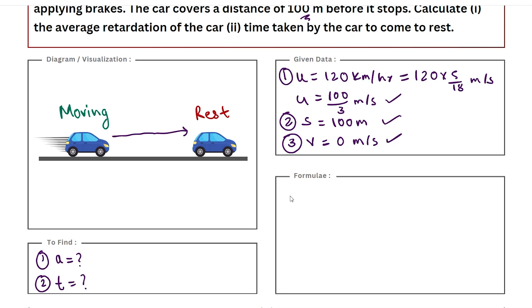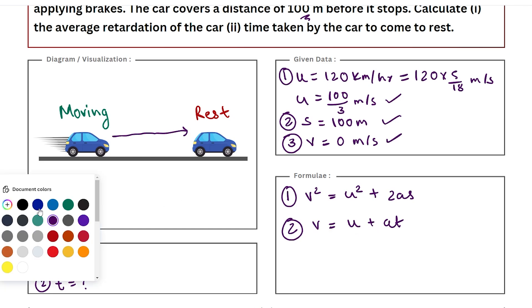To calculate a, the most appropriate formula would be the third equation of kinematics, v² = u² + 2as, because we have all the variables except for a given to us. Second, to calculate time, we will be using the first equation of kinematics, v = u + at. After calculating the value of a, we will substitute this value in this equation to calculate our time.